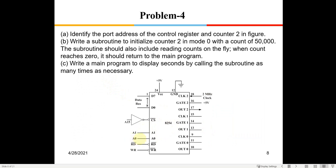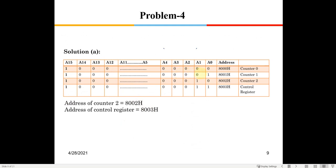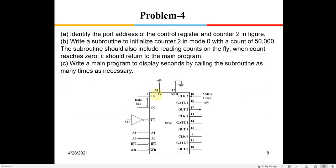For 8254, A0 and A1 are connected directly because this is a timer and we are not fetching 16-bit data in parallel. A15 is decoded and used as chip select. Since A15 must be 1 and A14 down to A2 are assumed zero, the addresses are: 8000h for counter 0, 8001h for counter 1, 8002h for counter 2, and 8003h for the control register.